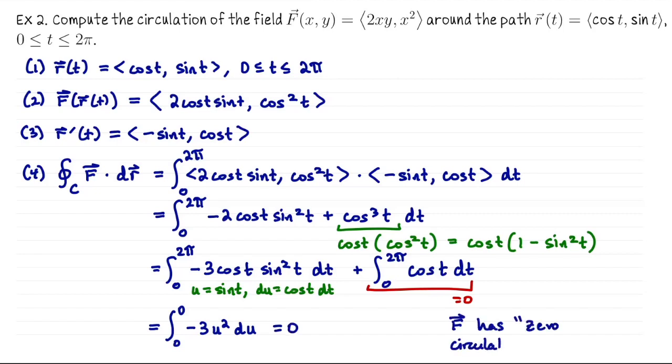So here we say this vector field has 0 circulation around this curve. Turns out I secretly knew that was going to be the answer all along, in part because I'd already worked out the calculation, but also because F is a conservative vector field. And what we'll talk about next is that conservative vector fields always have 0 circulation. All right, so I'm looking forward to that. See you next time.